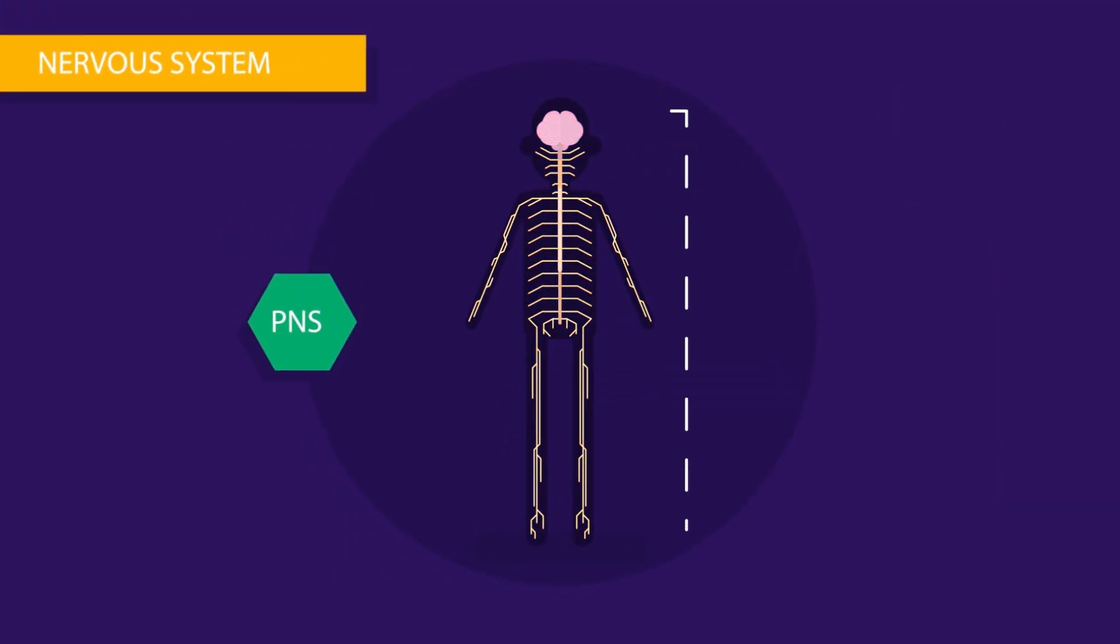PNS consists of total 43 pairs of nerve, among which 12 originate in brain, named as cranial nerves, and 31 originate from spinal cord, hence called as spinal nerves.